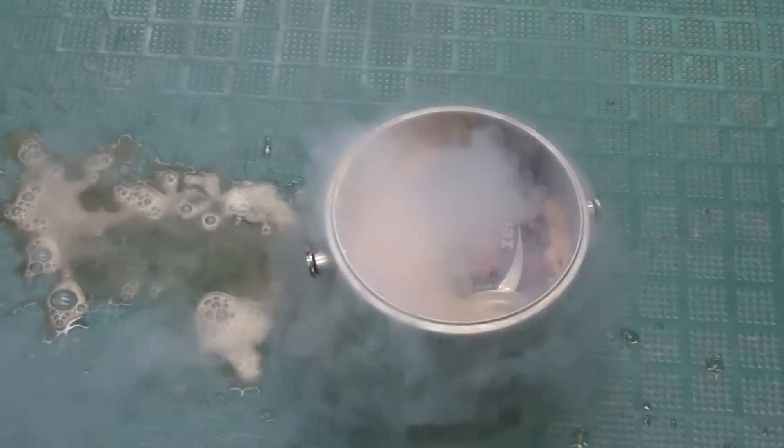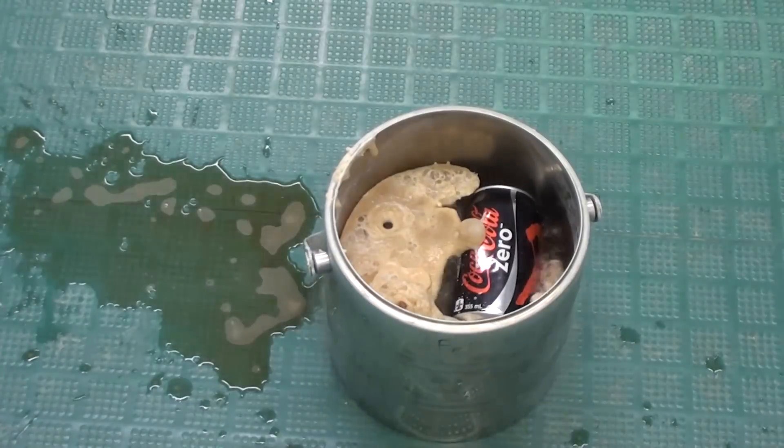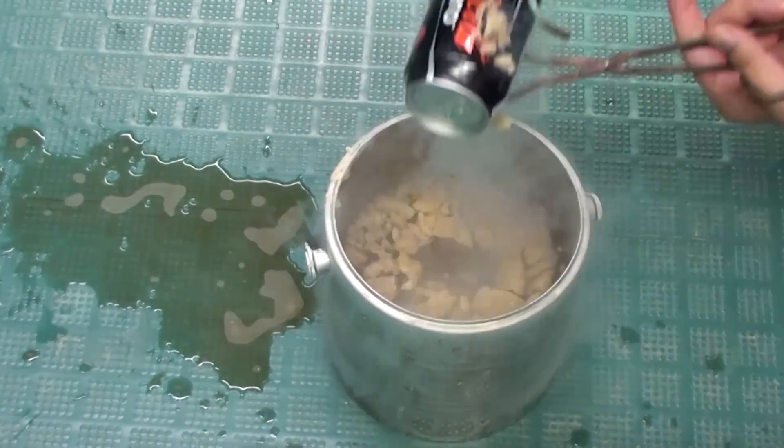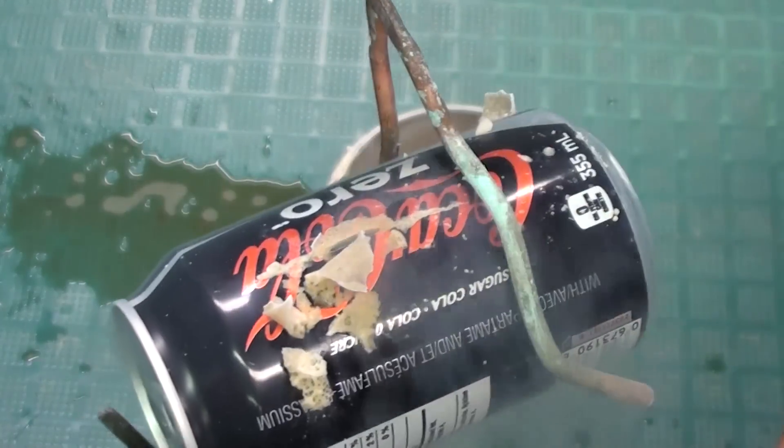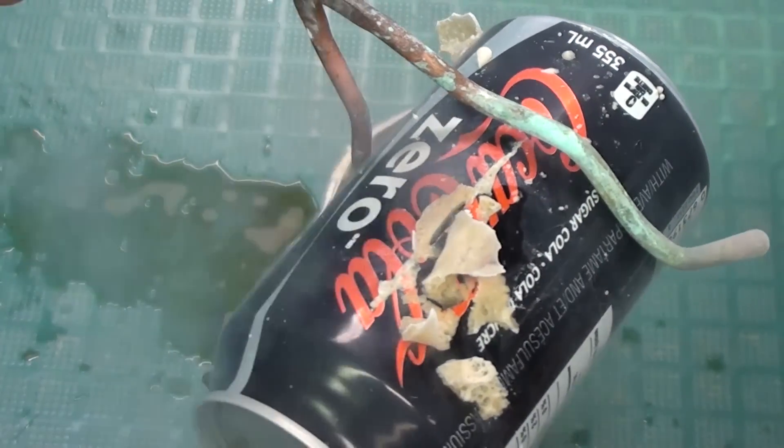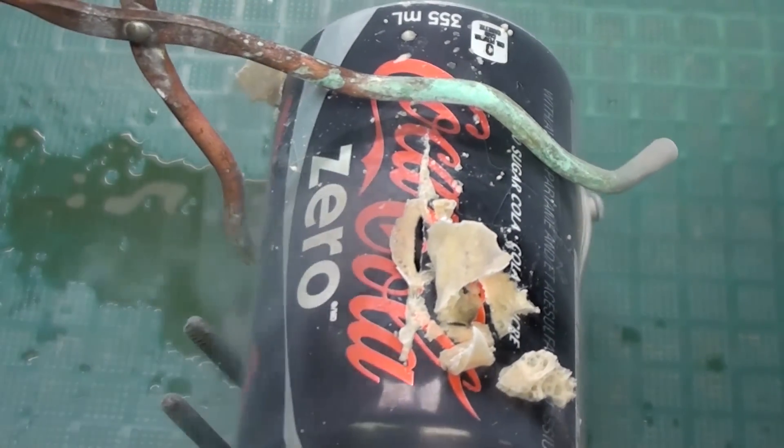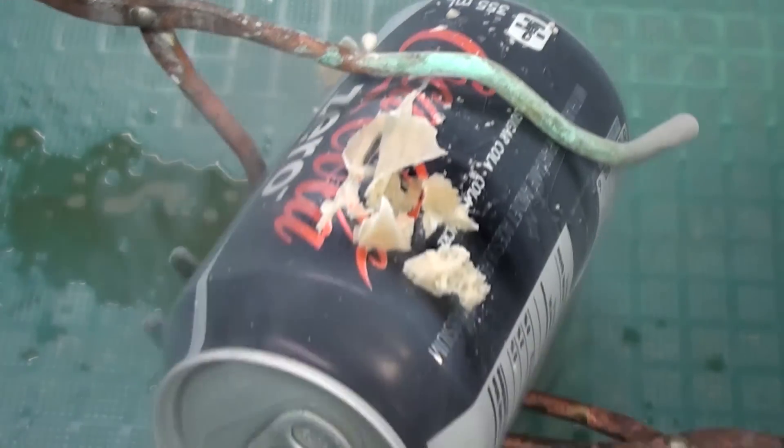At least it's a cool demo on ice expansion. Let me get the can. You can see here where the rupture occurred. Interestingly enough, it's at the side rather than at the tab. Anyway, thanks for watching.